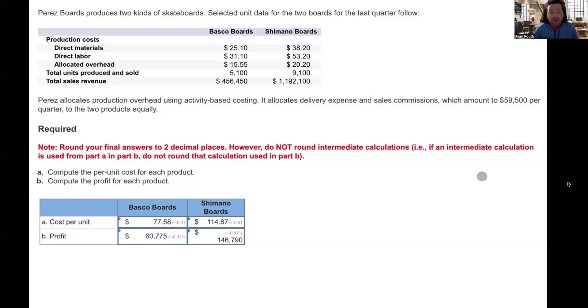So we need to round our answers to two decimal places. Don't round intermediate calculations. If an intermediate calculation is used from part A and part B, do not round that calculation used in part B. So compute the per unit cost for each product. We have to be very careful not to get overwhelmed by this information. It's not that difficult or challenging. You've got to pay attention to what it's asking and use the knowledge and tools that you've gained throughout your courses to answer this question.